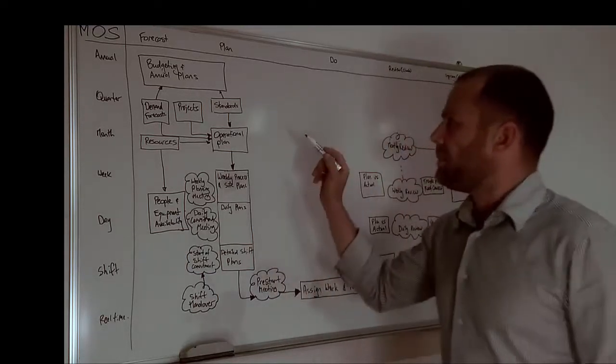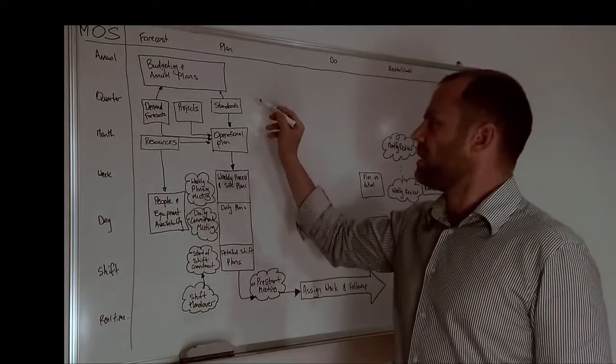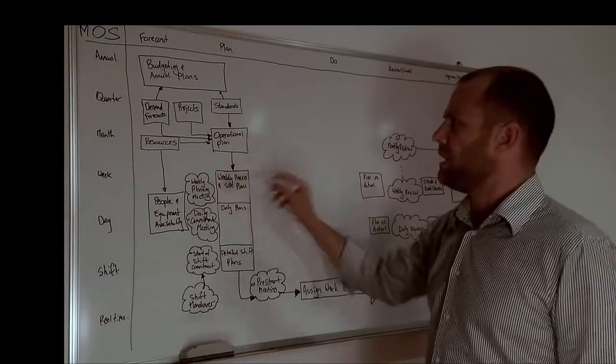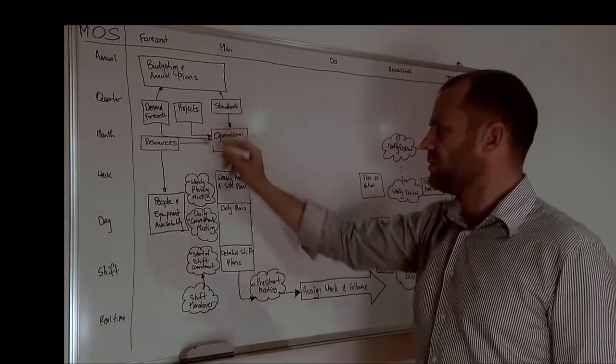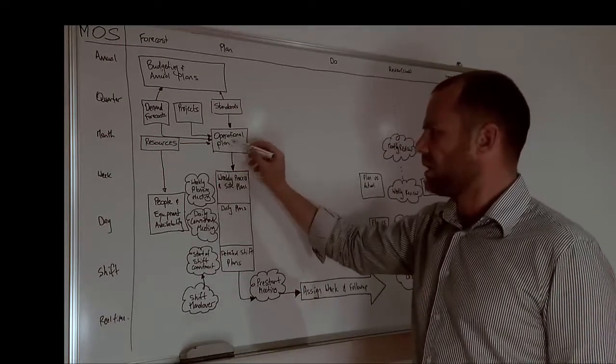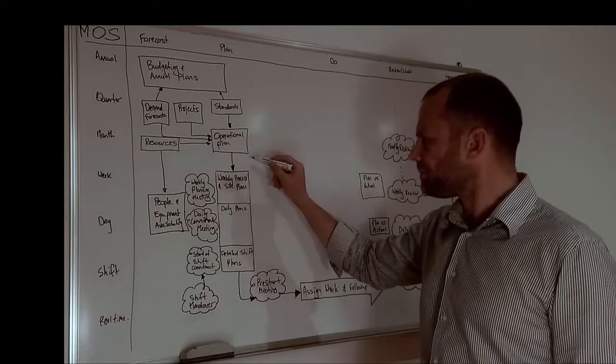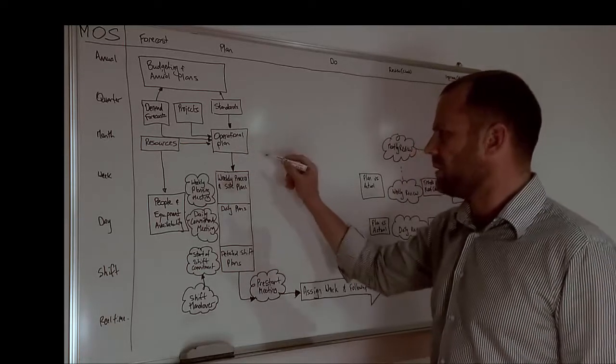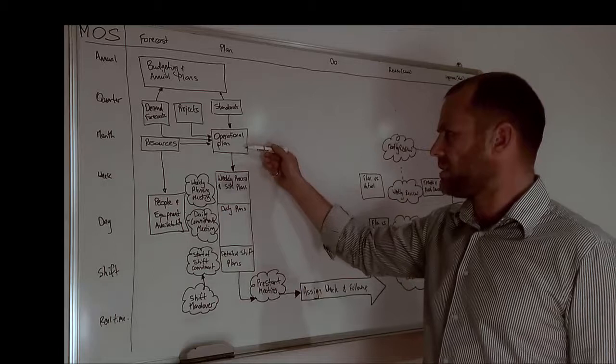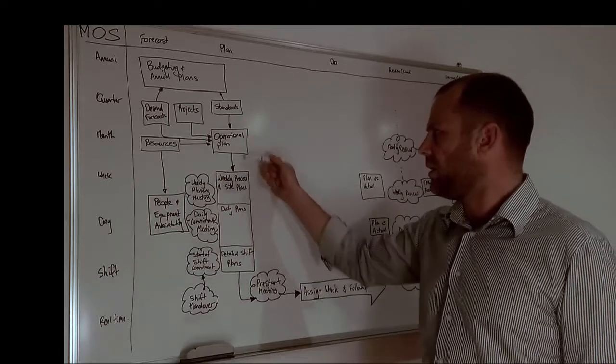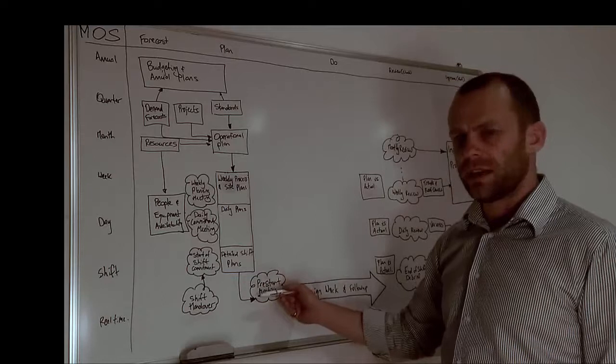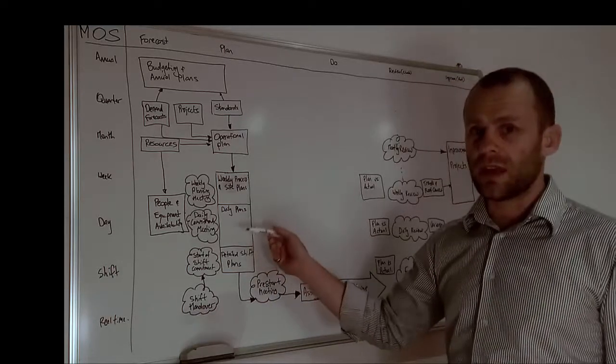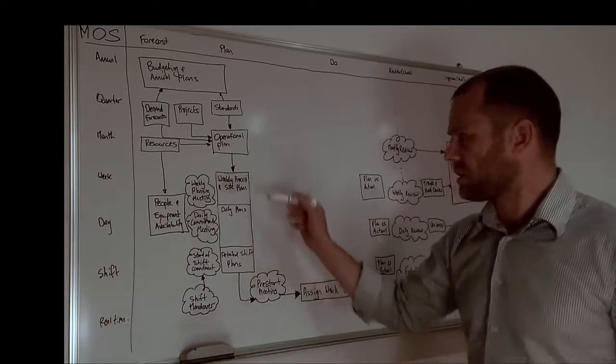So, up here, I won't belabor this too much, but up here we've basically got the budgeting and medium term, long term planning process. And it all comes back to an operational plan at about the monthly level. The most interesting part, I believe, is this bit where we transfer from the week down to real time where the work actually happens. Because that's where a lot of holes are in operations. So I'll just go through this quickly.